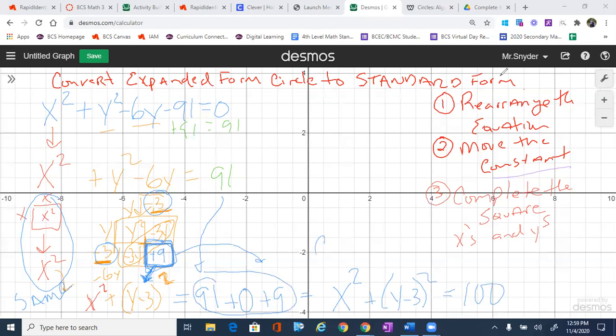Now what is the center? The center is zero positive three. Remember we use the opposite of the minus three and there's nothing being added to the X. And then what is the radius? The radius is the square root of a hundred, which is simply 10.